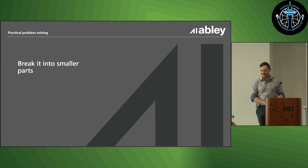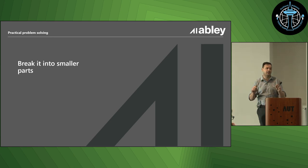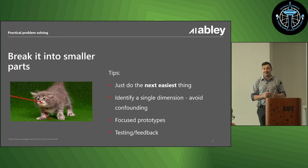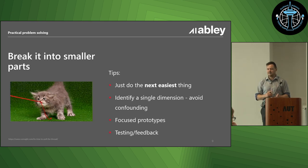So, break it into smaller parts. You don't need to solve the whole problem all at once. Think about how you solve a jigsaw - you start by finding all the edge pieces or picking all the pieces in one color. You're actually breaking the problem down into a single dimension that you can start to solve one at a time. Basically identify a thread that you can start to pick at. My tip here: it's literally just find the next easiest thing. Identify that single dimension and avoid mixing lots of dimensions together.